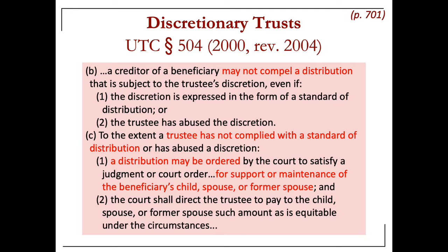To restate: the UTC does not allow creditors to reach the beneficiary's interest if the trustee has discretion whether or not to distribute the property. There are some exceptions to this rule — for a beneficiary's child, spouse, or former spouse — including alimony payments and payments of child support.